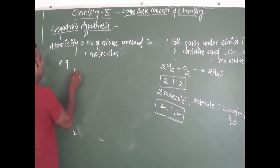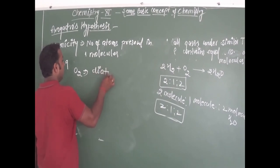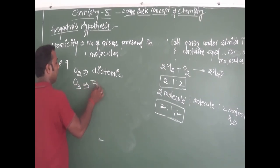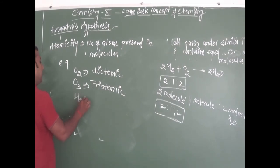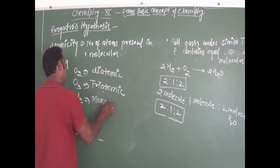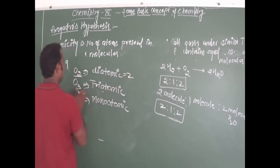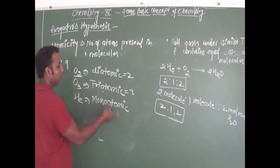Like, we have oxygen. In one molecule of oxygen there are two atoms of oxygen. So the atomicity of oxygen is diatomic. If we have to talk about ozone, we have three atoms — so it is triatomic. The atomicity of oxygen is 2. For helium, the atomicity of helium will be 1 — it is monoatomic.